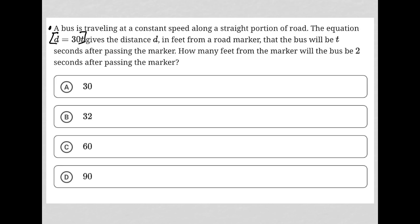How many feet from the marker will the bus be two seconds after passing the marker? So we're given this equation D equals 30T. We're told that T represents time and that D represents the distance past the marker. The question is asking how many feet from the marker will the bus be two seconds after passing the marker?